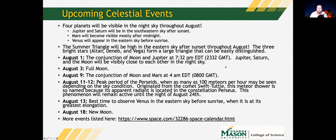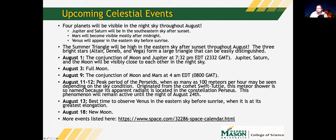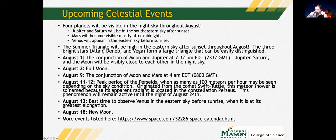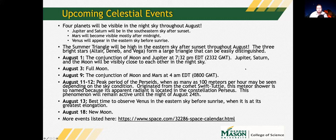On August 1st, there's a conjunction of the moon and Jupiter at 7:32 PM. Jupiter, Saturn, and the moon will be visibly close together. Full moon is August 3rd. Conjunction of the moon and Mars at 4 AM Eastern on August 9th. The Perseids will peak on August 11th and 12th with nice dark sky. August 13th is the greatest time to view Venus before sunrise if you're an early riser.